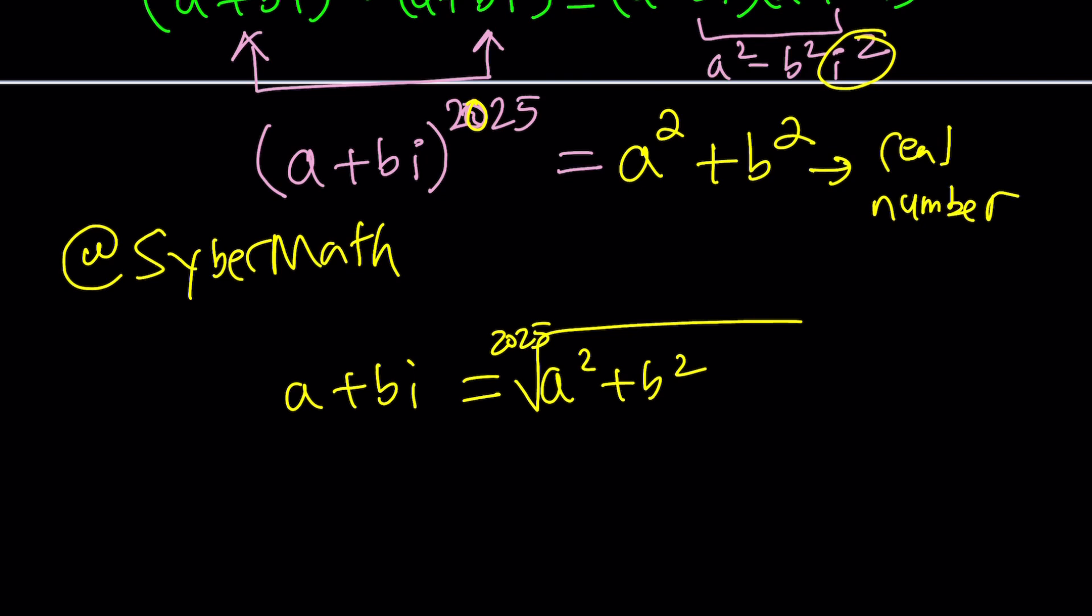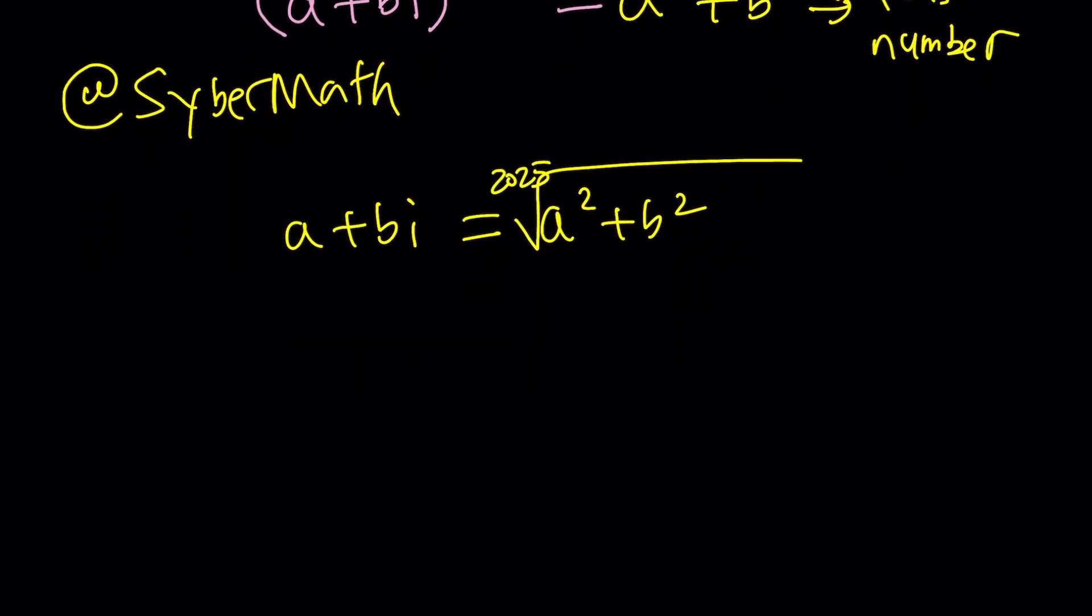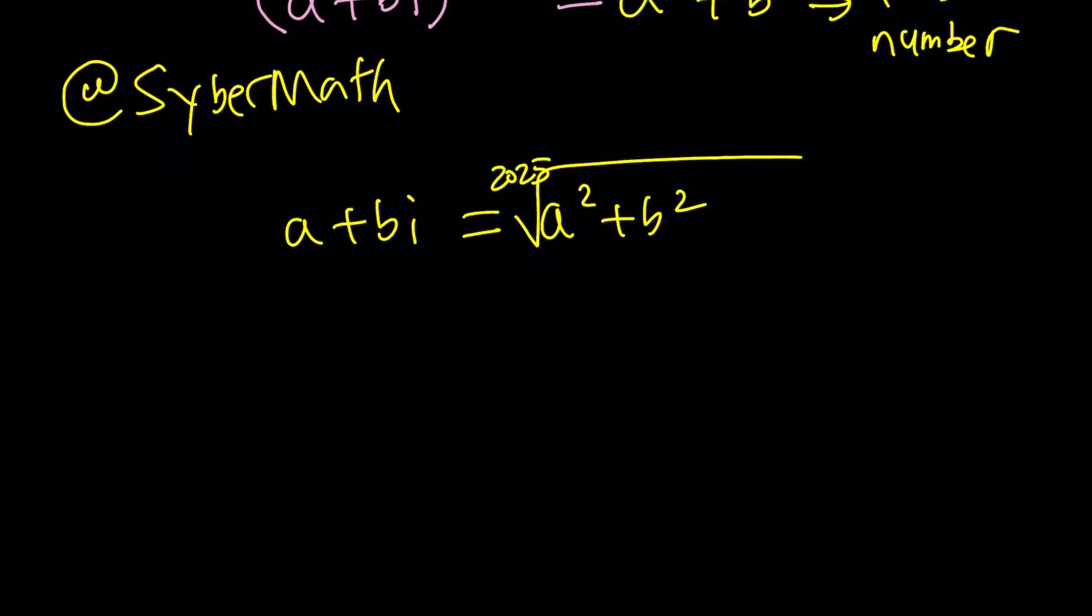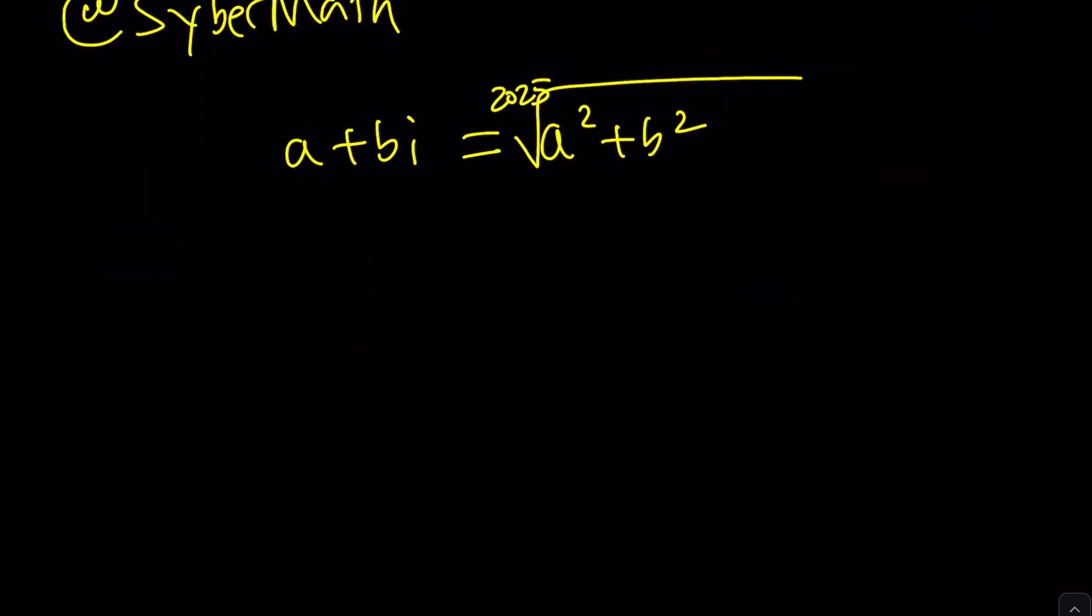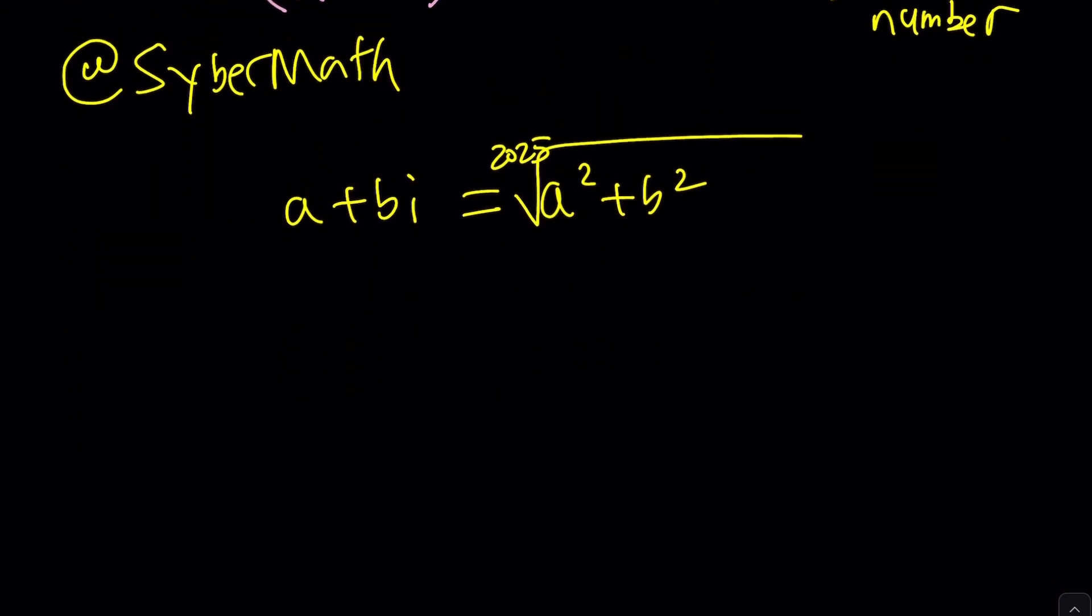Now, what's our goal? Our goal is to solve for a and b. Now, we're trying to solve for a and b, but we only have a single equation. So how do you find a and b from here? Well, here's the thing. I don't know a^2 + b^2. It's not given. So if I don't know that, I can't find a+bi. But wait a minute. Isn't a+bi a real number from here?